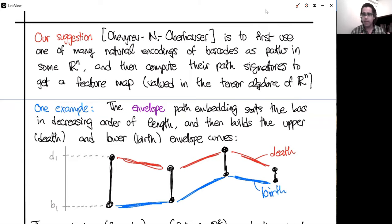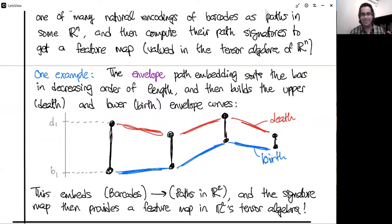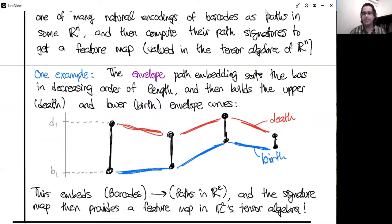So you've taken any barcode on the planet that you like. You've encoded it as two paths. And now you can compute the path signatures. You get some vector, you truncate the signature, you get a vector in the tensor algebra. And this is what we use for machine learning on several benchmark data sets. And it turns out because of the wonderful properties of the signature, it's universal, it's characteristic. This feature map performs far better than any of the others. So this is state of the art.